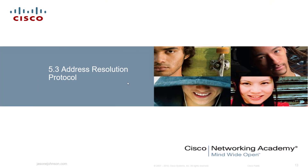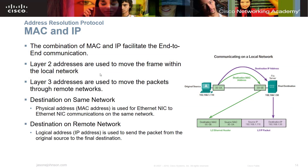Section 5.3 covers Address Resolution Protocol, or ARP. ARP is the combination of MAC and IP that facilitates end-to-end communication. Layer 2 addresses are used to move the frame within the local network — that's key to remember. Layer 3 addresses are used to move packets through remote networks or outside your LAN. Physical MAC addresses are used for Ethernet NIC to Ethernet NIC communications on the same network.